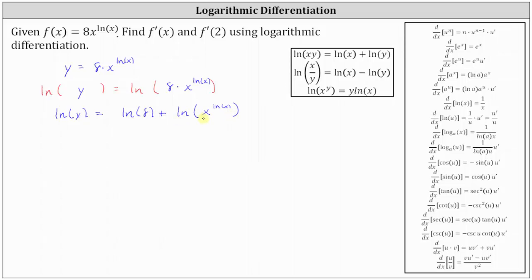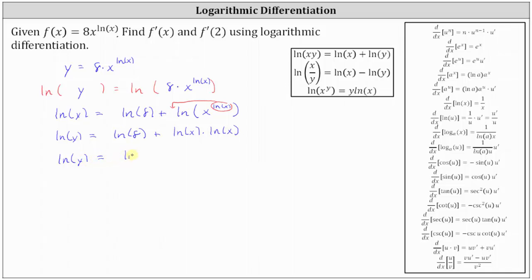We can expand natural log of x to the power of natural log x by applying the power property of logarithms: natural log of x to the power of y equals y times natural log x. This means we take the exponent natural log x and move it to the front, multiplying it by natural log x. Since we have natural log x times natural log x, we write this as the square of natural log x, giving us: natural log y equals natural log 8 plus the square of natural log x.